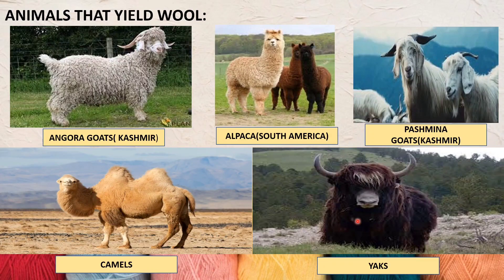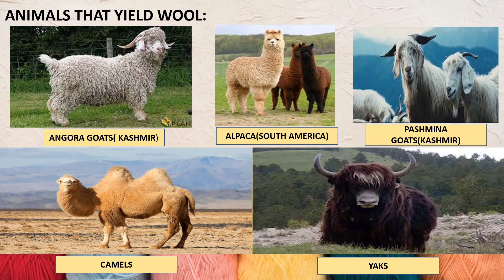Yaks also provide wool. The kind of wool varies in each of these animals — goats, sheep, camels, and yaks all give different kinds of wool. In the next video, we will see the processing of silk fiber. Thank you and have a nice day.